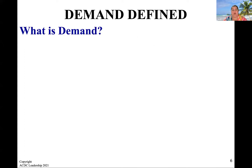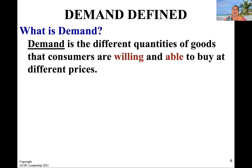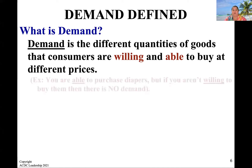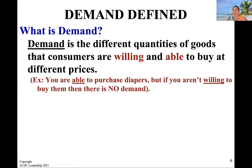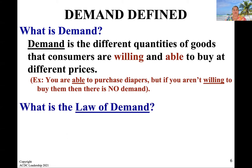So let's go through your notes. What is demand? The different quantities of goods that consumers are both willing and able to buy. The difference is you might be able to buy something, but if you aren't willing to buy something, then that doesn't count as demand. In theory, any person could potentially buy anything — but for example, if you're not in the market for diapers and you don't have kids, you might be able to purchase them, but you're definitely not willing to. So you don't get calculated into the demand numbers.